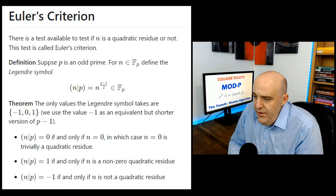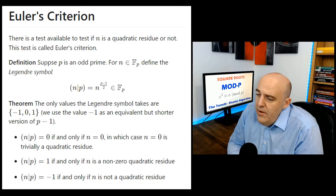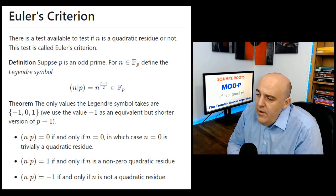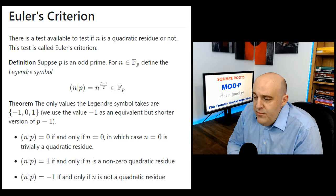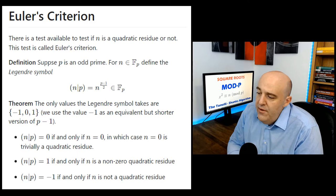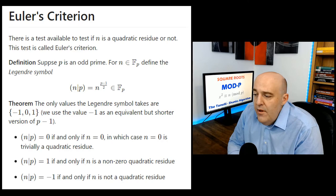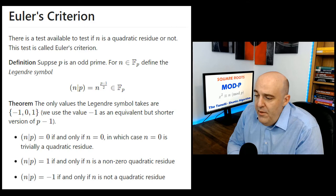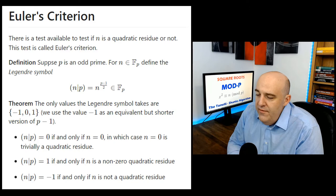There is a really nice test to know if a given number n is a quadratic residue or not, and that's called Euler's criterion. If we introduce a symbol called the Legendre symbol, it's n to the power of (p minus 1)/2. Since p minus 1 is even, (p minus 1)/2 is a well-defined whole number. And it's n to that power inside fp — so that's some element of fp.